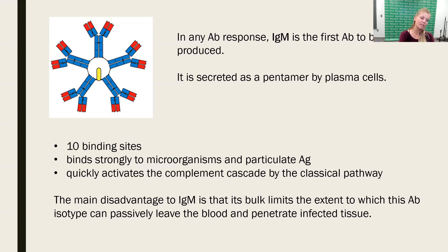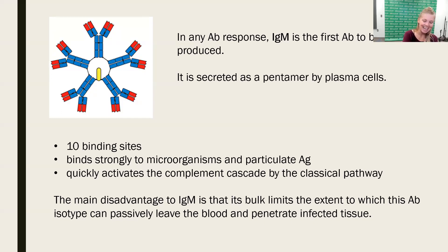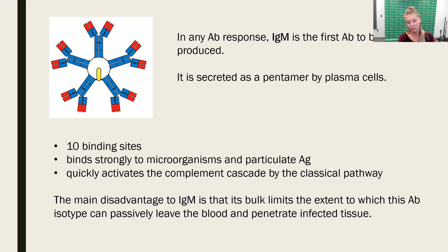When IgM is in its secreted form, it's going to be a pentamer. This image isn't the exact structure — it tends to be a little more lopsided — but it is a pentamer where all the FC portions are together joined by a joining chain. Because there are five monomers put together, that means there are 10 binding sites, and with 10 binding sites you can see how it could strongly bind to a microorganism.